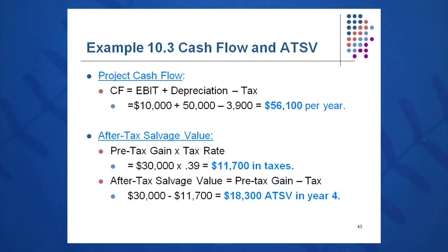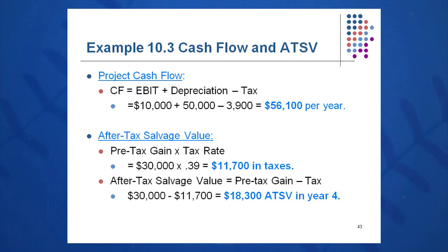I want the after-tax cash flow on the salvage value. That $30,000 gain from selling the computer equipment requires paying $11,700 in taxes at the 39% rate, which reduces my cash flow. So $30,000 minus $11,700 gives an after-tax salvage value of $18,300. That is a positive cash flow in year four — I don't get the full $30,000; I get $18,300 after taxes.